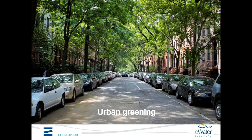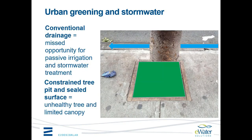Some of the people joining us today are probably from Council, and some are probably other consultants and modelers. With conventional drainage, water runs down the gutter, essentially bypassing the tree, and there's a missed opportunity for passive irrigation. Sitting right beside that we have a tree in a pit with a concrete seal all around it, and essentially the outcome is an unhealthy, unhappy tree with not a great deal of canopy cover, with water running right past it.